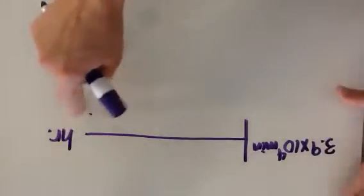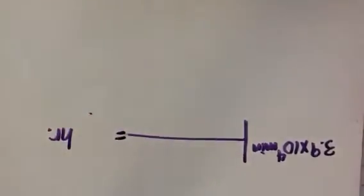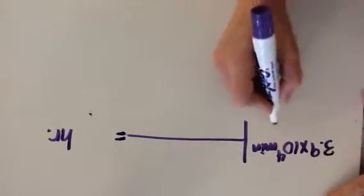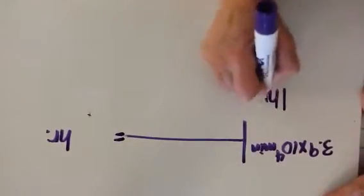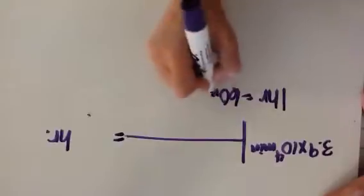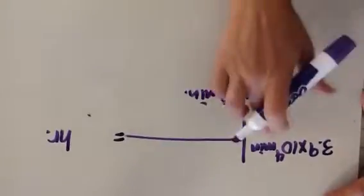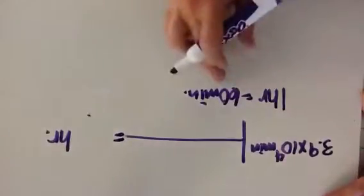And I'm going to make sure that my label is over here waiting for me so that I know if I've done my problem correctly. So I see that we're starting in minutes, and we're going to end in hours. I don't know how many hours 3.9 times 10 to the 4th minutes is, but I do know some statements about minutes and hours.